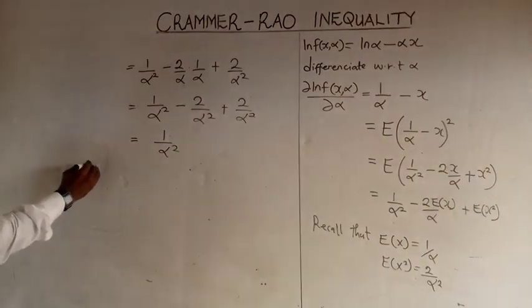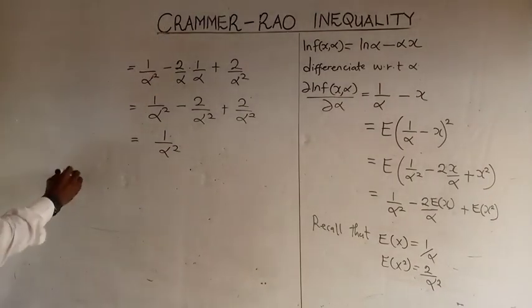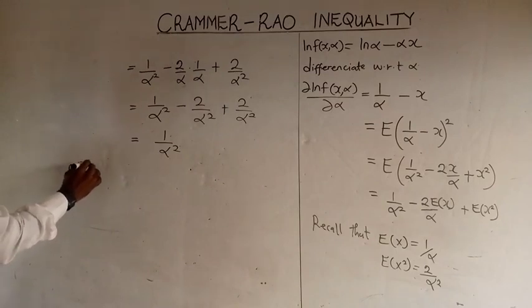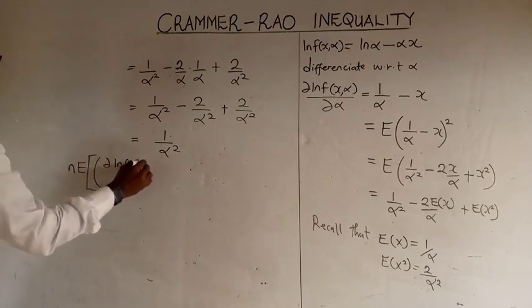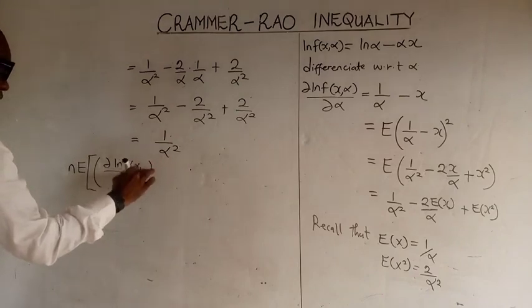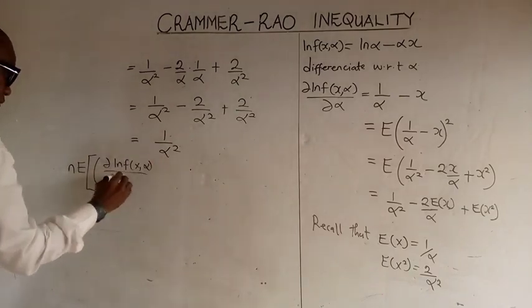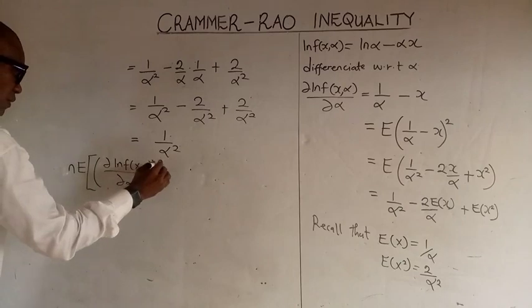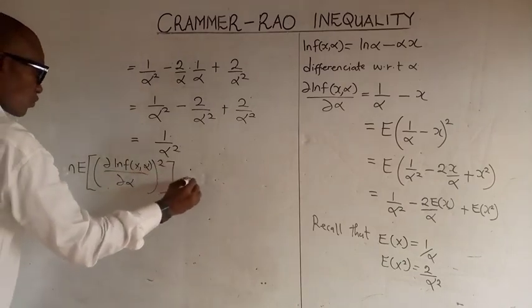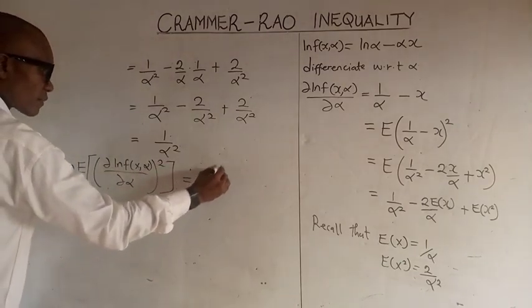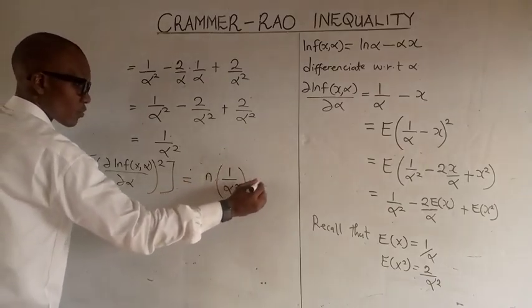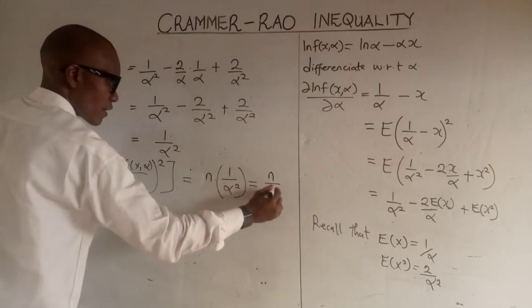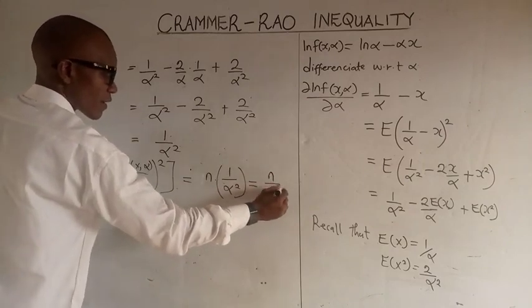We now compare with the Cramér-Rao inequality, which is n times the expected value of this, all over alpha squared. We have n times 1 over alpha squared, which is equal to n over alpha squared.